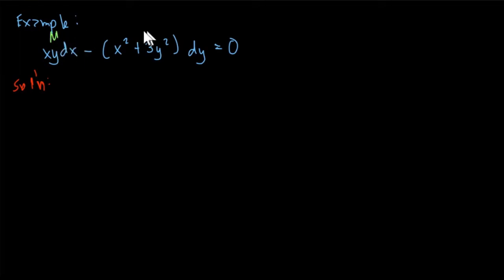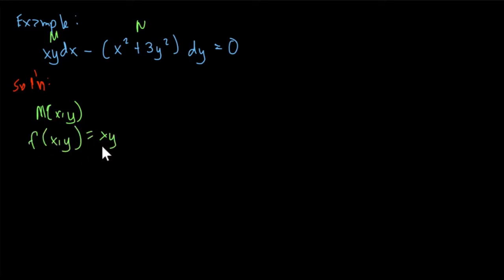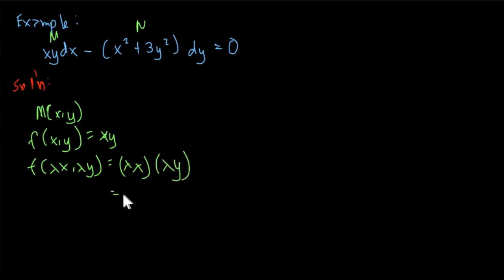This is M and this is N. So our M(x, y) = x·y. So f(λx, λy) is equal to (λx)(λy) = λ²·x·y. So we can say that this equals λ² · f(x, y). This is the same, so M is homogeneous.